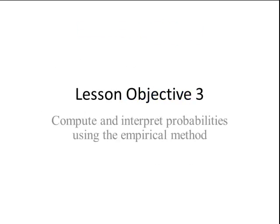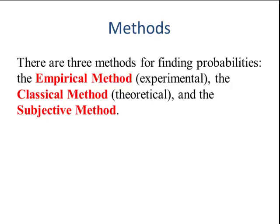Lesson objective number three. There are three methods for finding probabilities: the empirical method, the classical method, and the subjective method. We will begin with the empirical method.